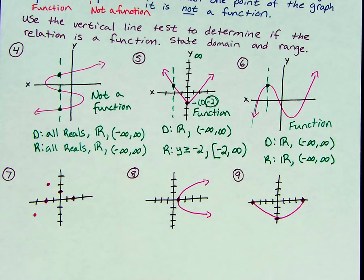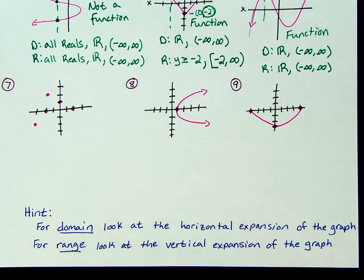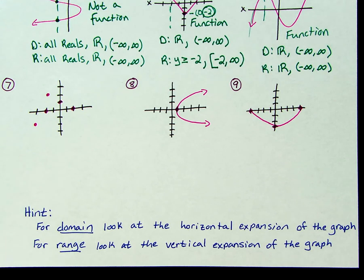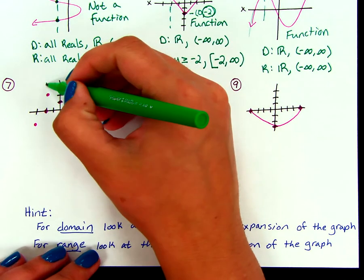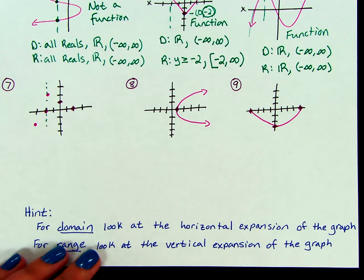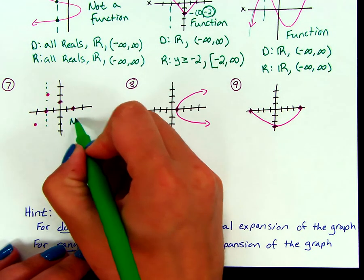Continuing with our examples, if we take a look at number 7, this is an example of a discrete graph. To decide if it's a function, I want to see if I can put a vertical line through more than one point. Looking at these two points right here, I can draw a line through both of them. So this is not a function.